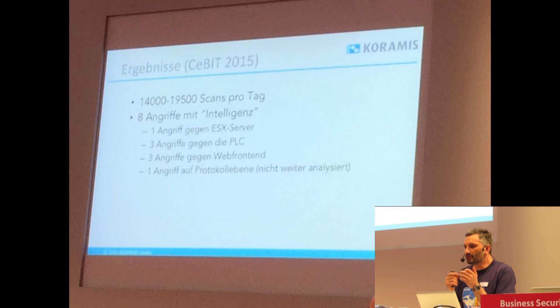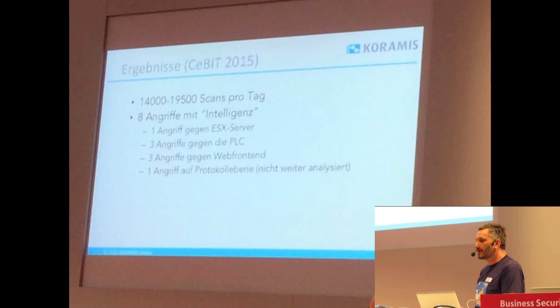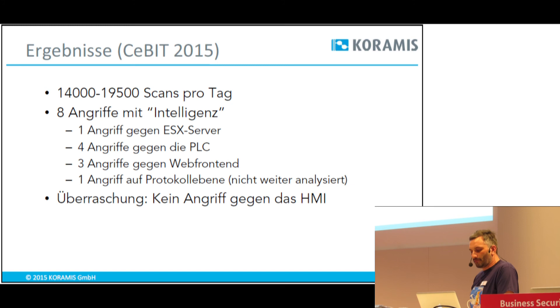Hin und wieder war es auch so, dass die Bahn einfach stand und wir neu starten mussten. Wir hatten nicht immer die Zeit, die Angriffe zu analysieren. Was mich aber gewundert hat: Der leichteste Angriffsvektor wurde nie genutzt. Wir haben nämlich auch ein HMI ins Netz gestellt, ganz normal über Remote Desktop, offen — Port 3389 — versehen mit dem Standardpasswort SIMATIC, also User SIMATIC-User und Passwort SIMATIC. Und überraschend: Dieser Eingriffsvektor, der sehr einfach gewesen wäre, wurde kein einziges Mal genutzt.